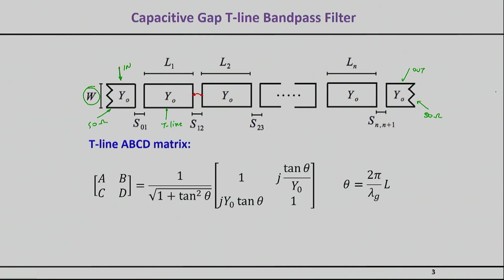It's not necessarily true that the width of the resonators must be the same W. In fact, there are good reasons why it should not be. For example, the quality factor of these resonators is a function of the impedance. So often we optimize the impedance of these resonators to have the highest possible quality factor. But to keep things simple, I'll assume the resonator impedance is also 50 ohms, meaning W will be the same as the input and output.